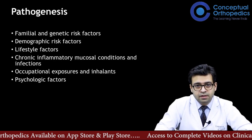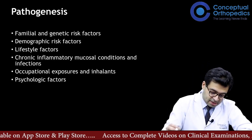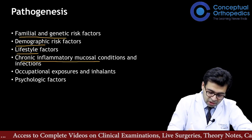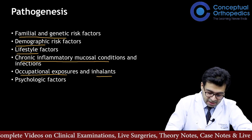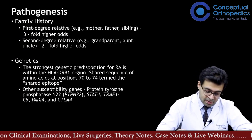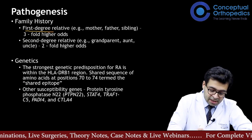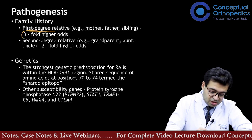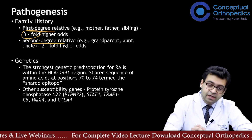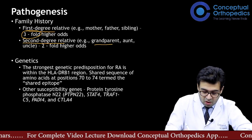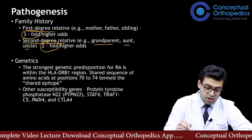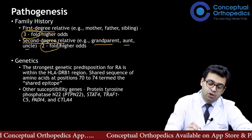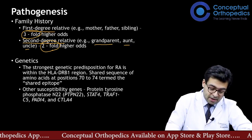The risk factors predisposing to development of rheumatoid arthritis include: familial and genetic factors, demographic and lifestyle factors, chronic inflammatory mucosal conditions, occupational exposures and inhalants, and psychological factors. If a first-degree relative — a parent or sibling — is affected with RA, the chances of developing RA are threefold higher. If a second-degree relative is affected, the chances are twofold higher, indicating a clear genetic basis.